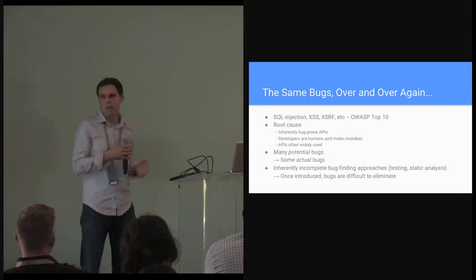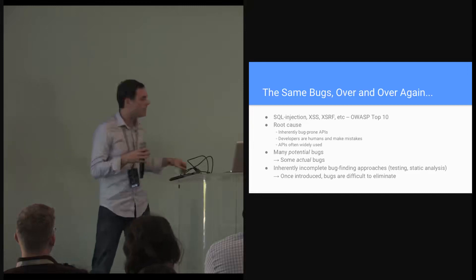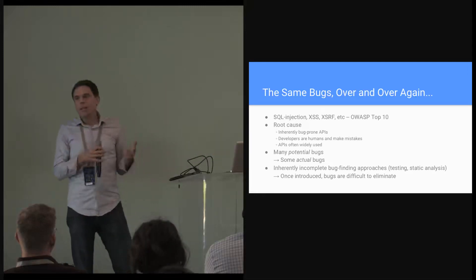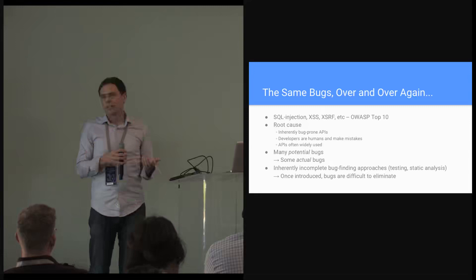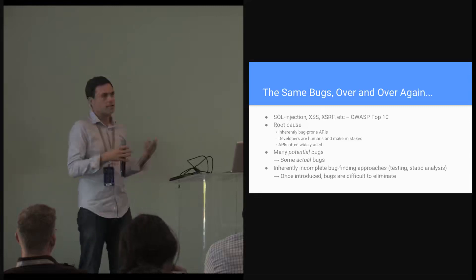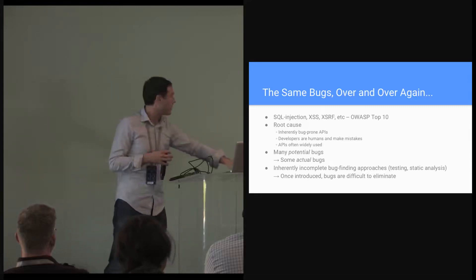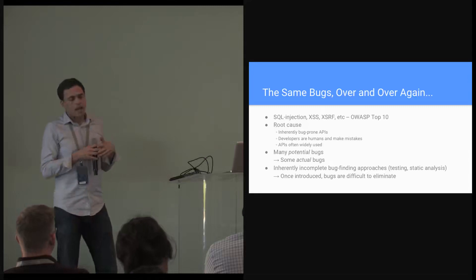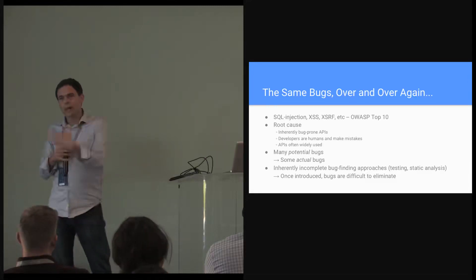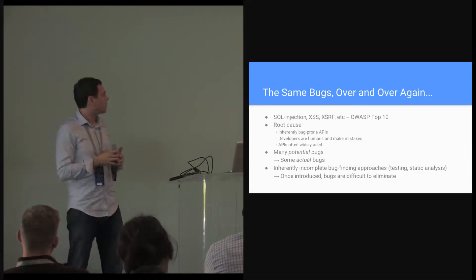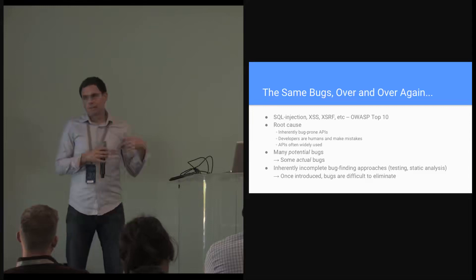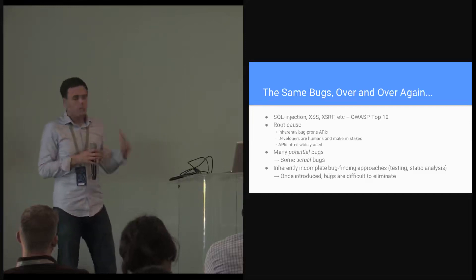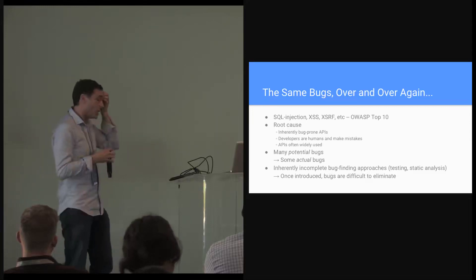Developers are human. They make mistakes. So we're basically in a situation where we have many potential bugs and, therefore, some actual bugs. It's pretty much just inevitable. And what we have to do is — because we now have code that has bugs in it — try to isolate those, find those, and eliminate them before we ship the code to production.